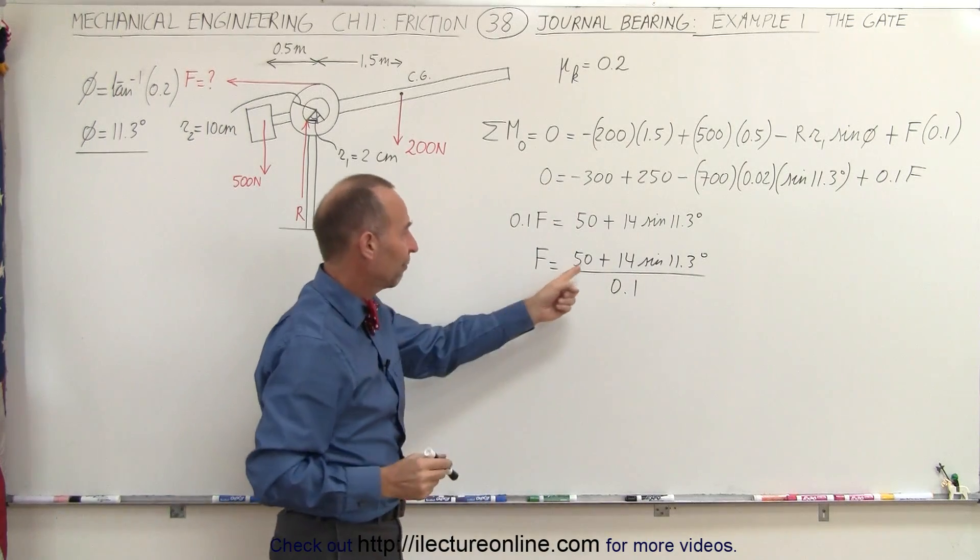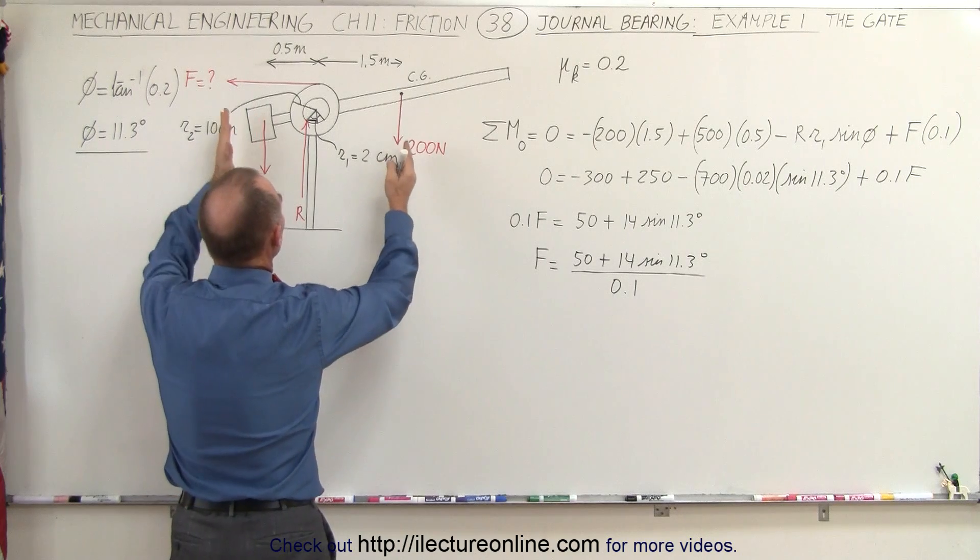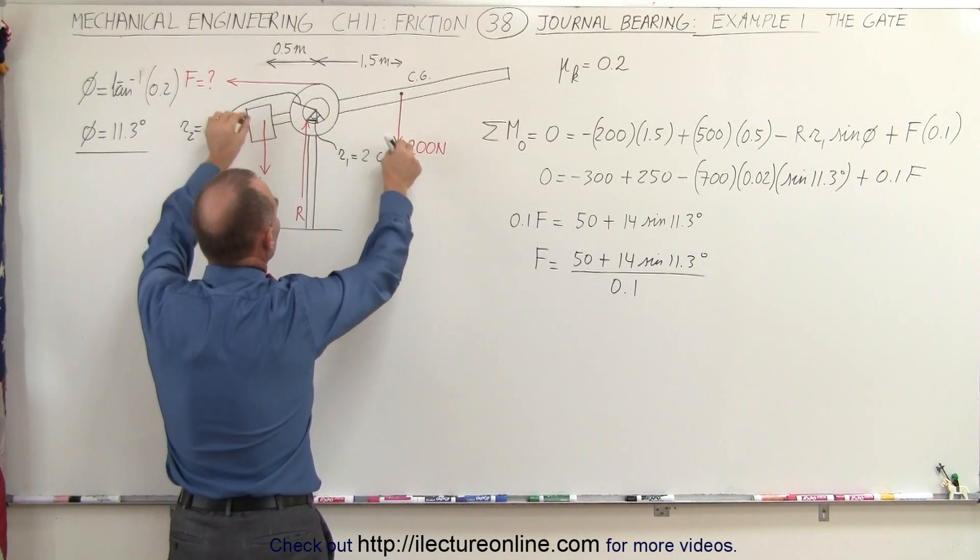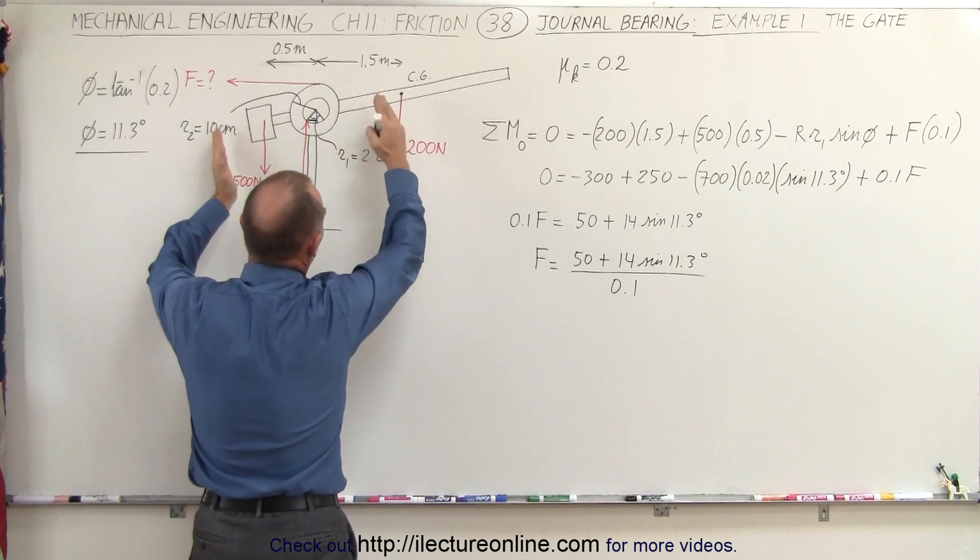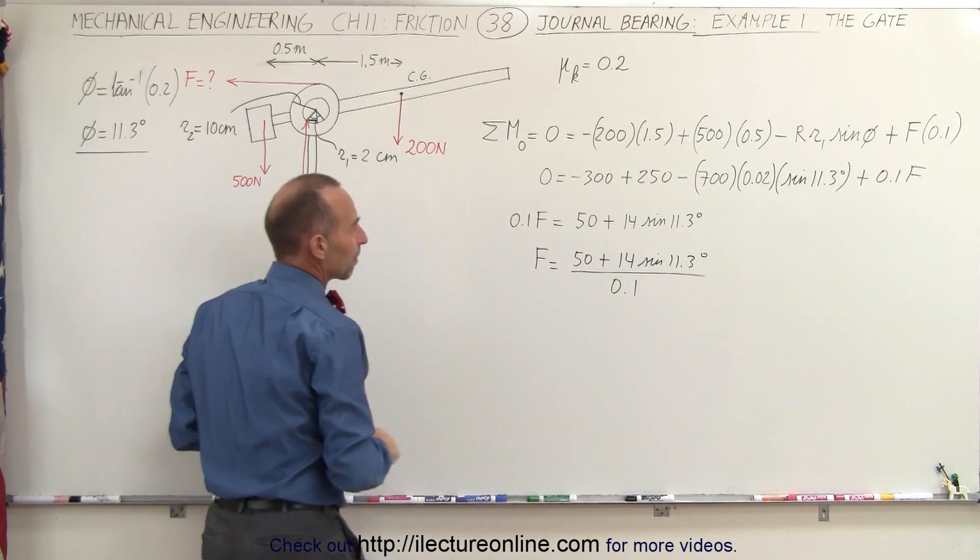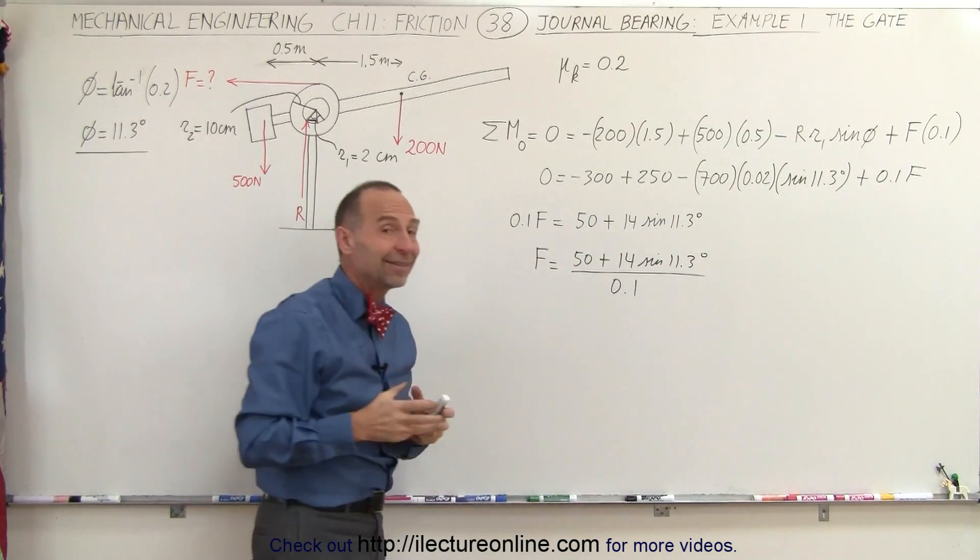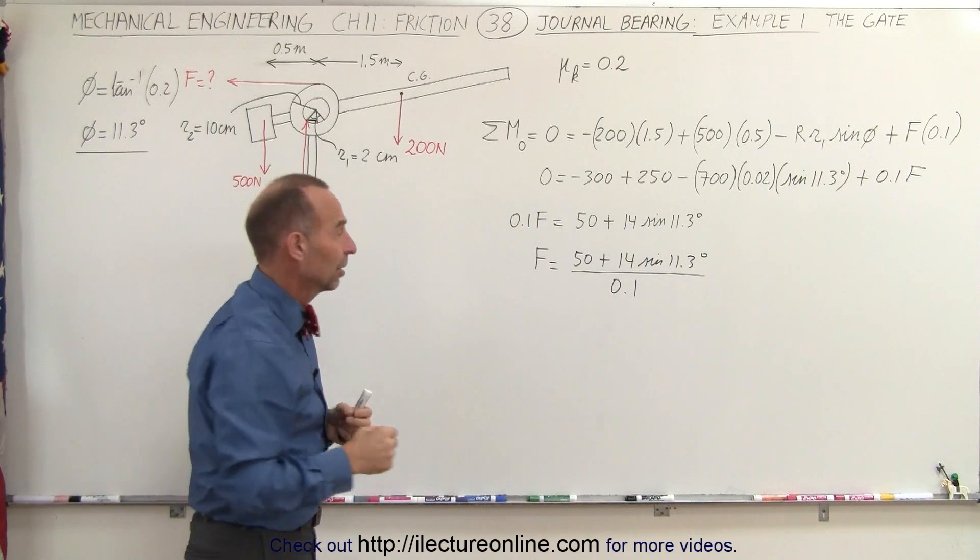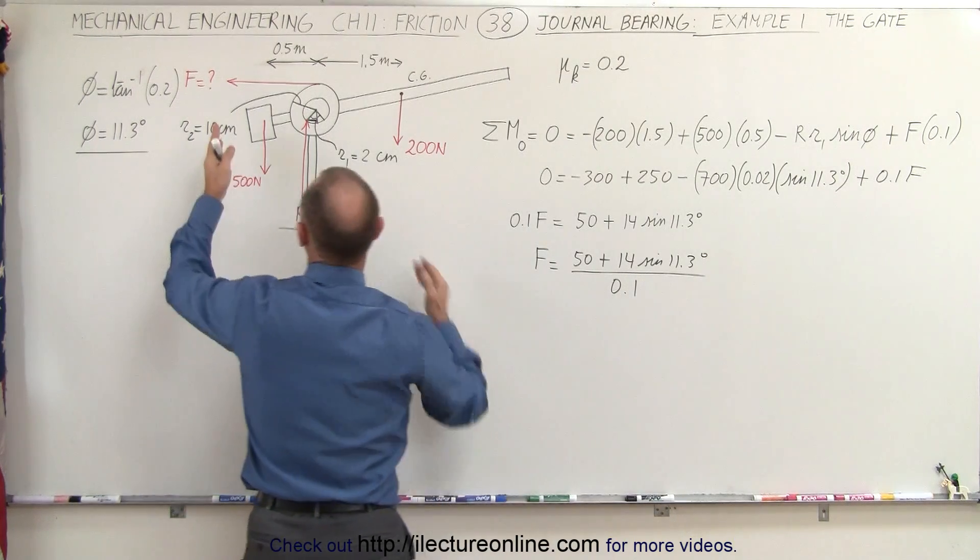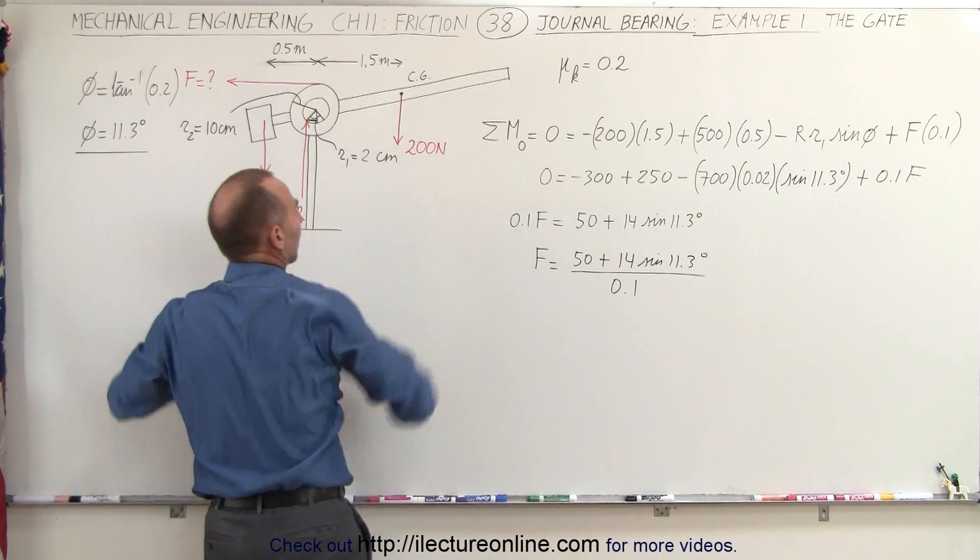Now notice that 50 is really the force required to move the gate if there was no friction. It's simply the difference in the weight of the counterbalance and the weight of the gate, and of course the moment that they cause. The 14 times the sine of 11.3 degrees, that is the additional force required to overcome the friction. Of course, the 0.1 here is simply that the force is acting over a distance of 10 centimeters away from the point of rotation.